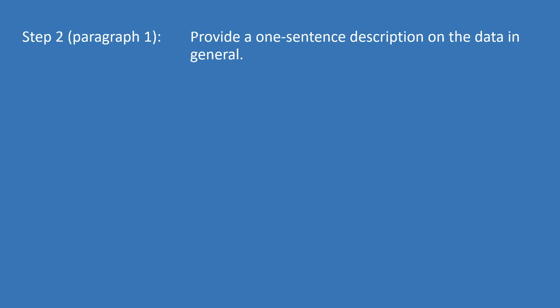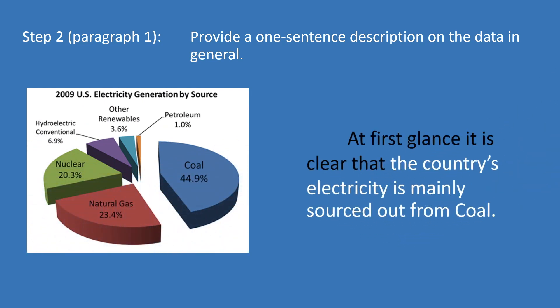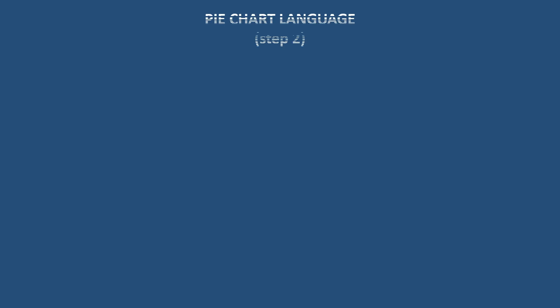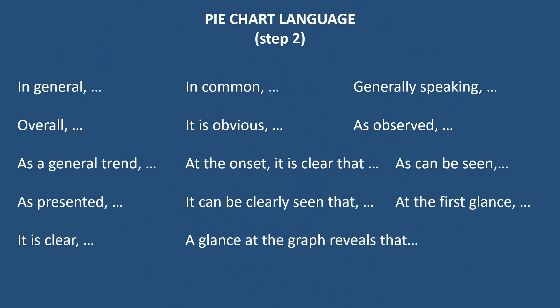Moving on to step two: write a one-sentence description of the overall trend. For this sample chart, we can state it this way: "At first glance, it is clear that the country's electricity is mainly sourced from coal." An introductory phrase is used to begin this one-sentence description, and then the rest of the sentence describes the main trend — the one that stands out at first glance. Vary the language you use in your essay; the following list may help you. Take a moment to read everything and use them in a sentence for practice.